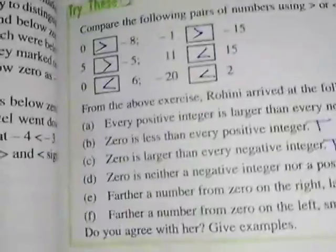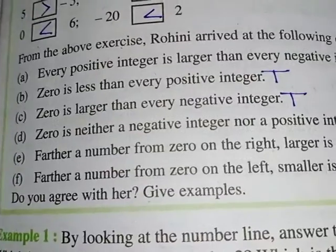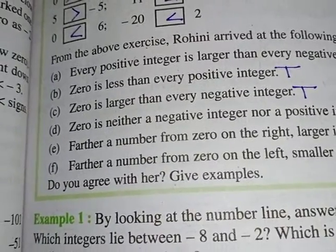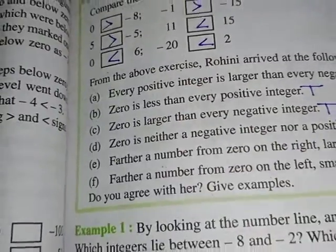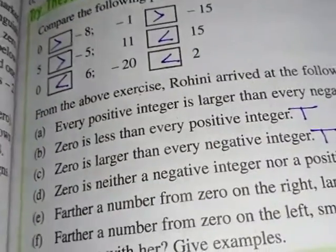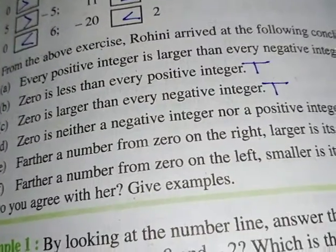Zero is less than every positive integer. This is also true - 1, 2, 3, 4, 5, 6, 7, 8, 100, 200, 300, 400, all these are positive numbers. From all these positive numbers, zero is less than them.